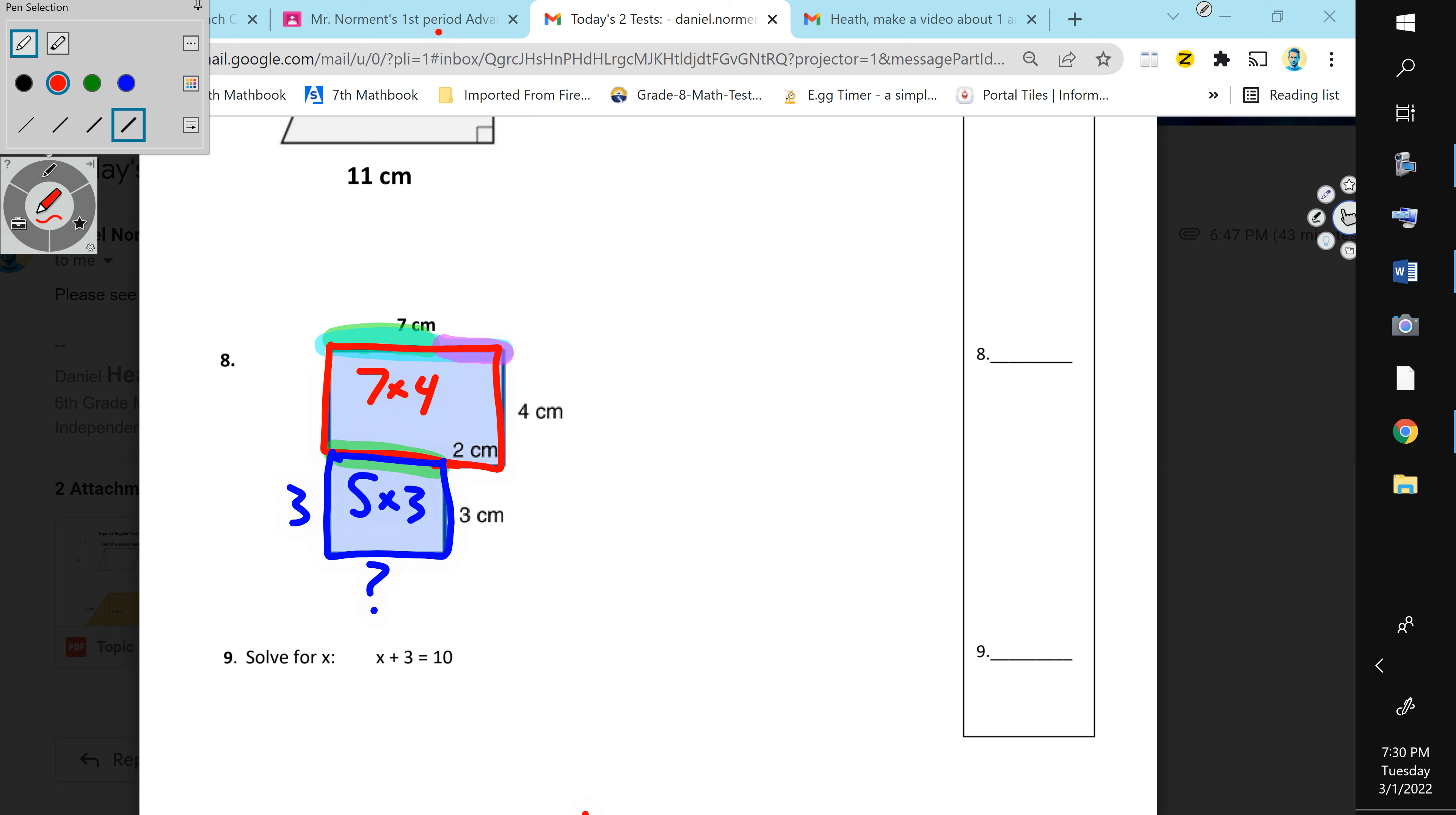So, this rectangle in the middle is going to be five times three. So, do seven times four, get your answer. Do five times three, get your answer.